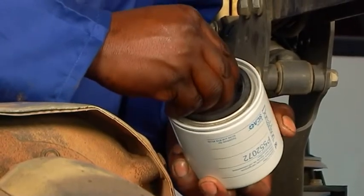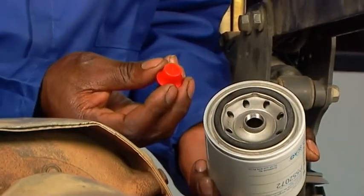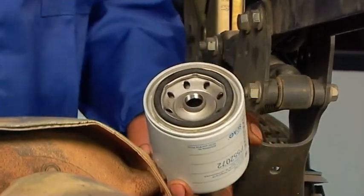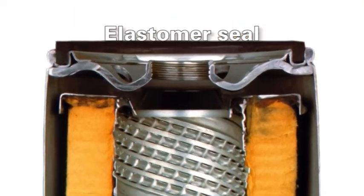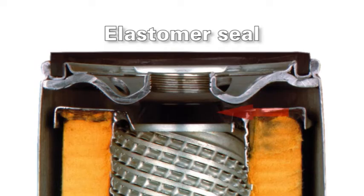The Donaldson tapered thread profile simplifies installation and prevents cross-threading. Not all filters have a seal between the thread plate and end plate. Donaldson's seal is constructed of molded elastomer, which is designed for extreme cold and heat.